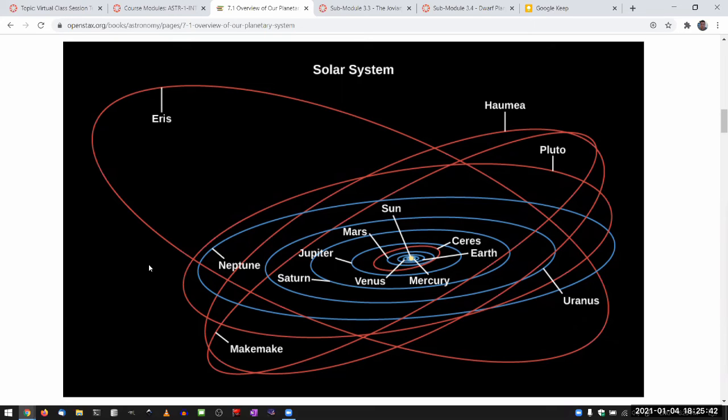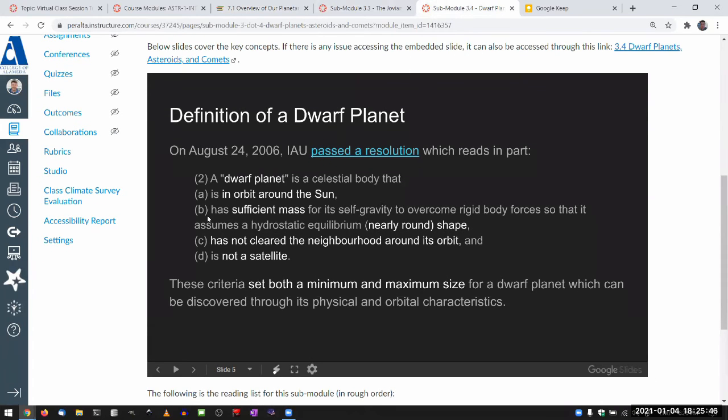But as far as the trans-Neptunian objects go, there could still be a lot of fairly large objects. Objects that are large enough to have sufficient mass for its self-gravity to overcome rigid body forces, so that it assumes a hydrostatic equilibrium. Or something that looks roughly spherical, there may be many more objects like that beyond Neptune's orbit.